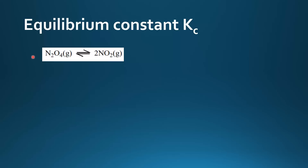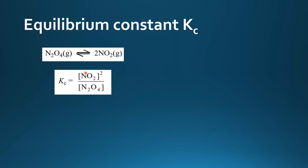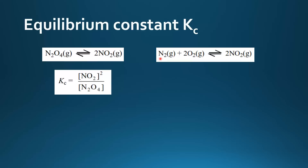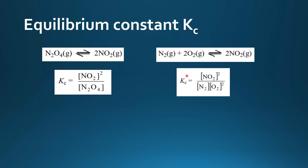Here are two more examples. In the first reaction, N₂O₄ forms 2NO₂, and the equilibrium constant expression is the concentration of the products raised to the power of the coefficient, which is 2, divided by the concentration of the reactants. In the second example, nitrogen gas reacts with oxygen gas to form nitrogen dioxide, and the Kc expression is the concentration of the products raised to the power of the coefficient, which is 2, divided by the concentration of the reactants, again raised to the power of their coefficients.